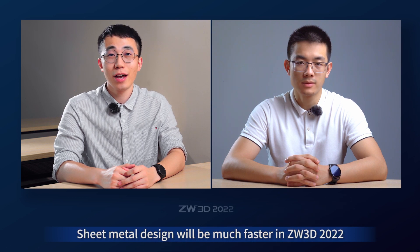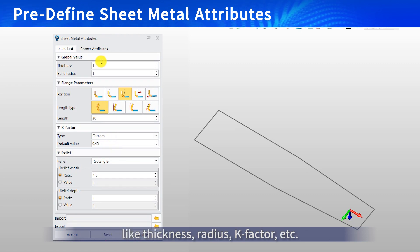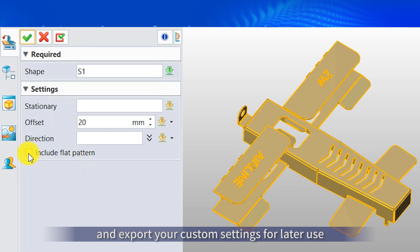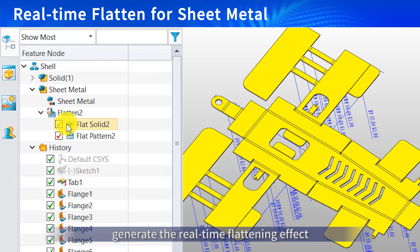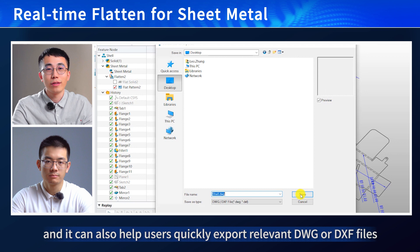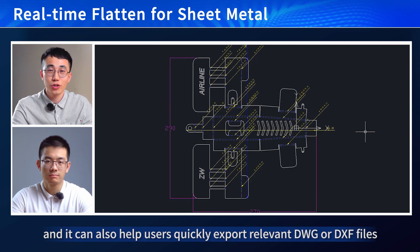What about sheet metal? Any enhancement? Yeah, I was just about to dive into that. The sheet metal design will be much faster in Zyber3D 2022, because users can pre-define the global attributes like the thickness, the radius, the K-factor, etc., and export your custom settings for later use. Moreover, the new flatten function can generate real-time flattening effect, and it can also let users quickly export DWG and DXF files.